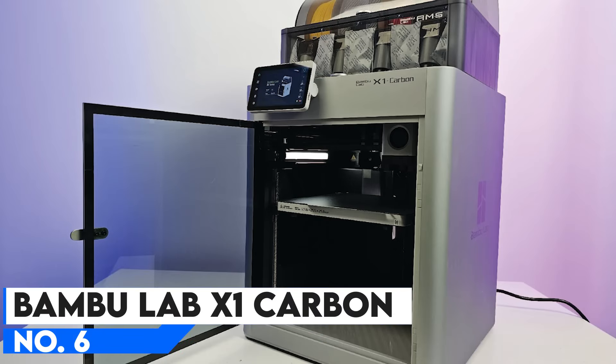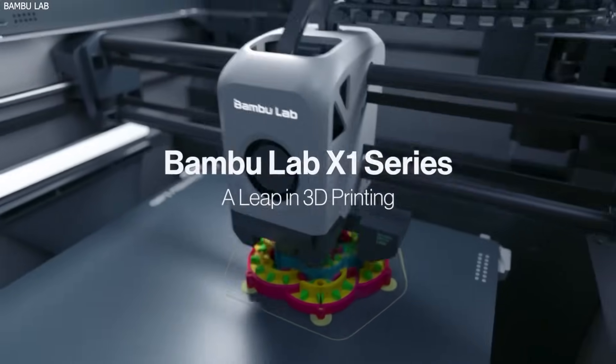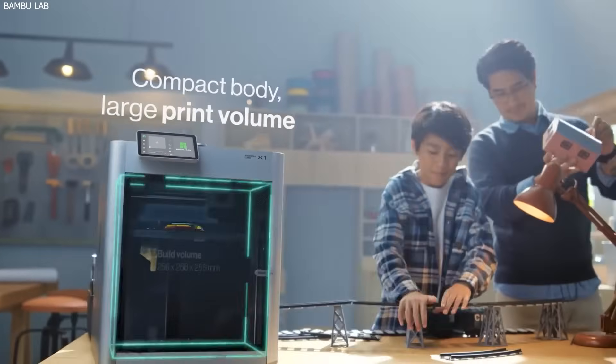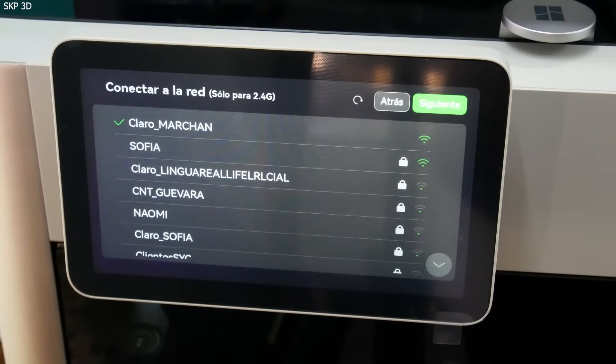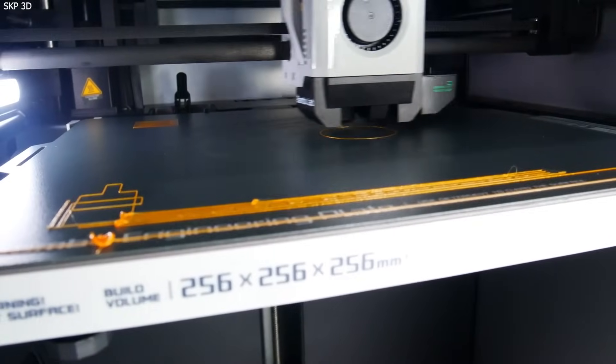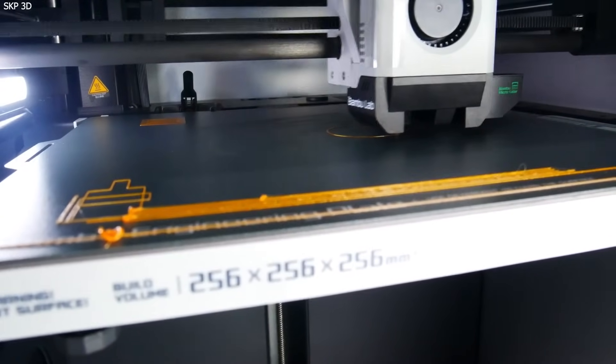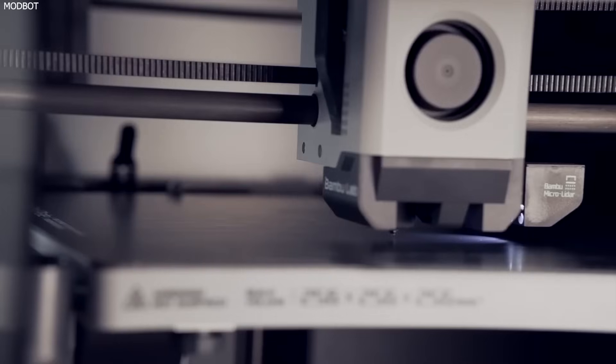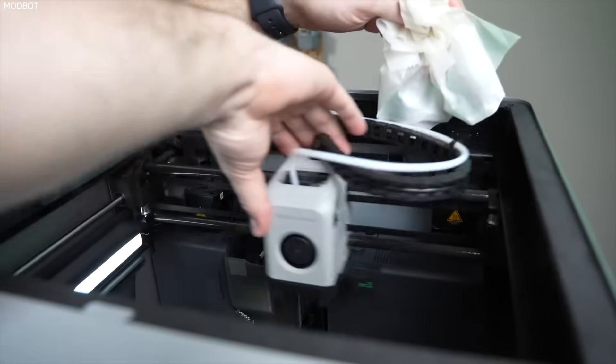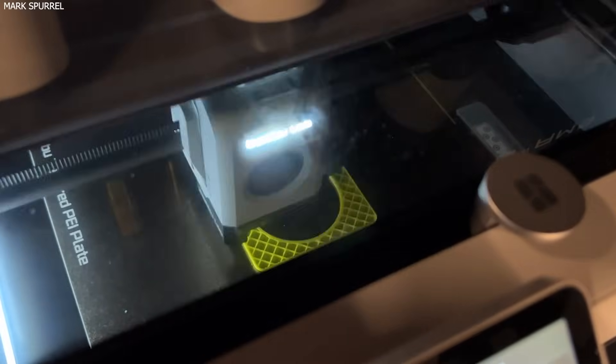Number 6: Bamboo Lab X1 Carbon, Best AI-Powered 3D Printer. The Bamboo Lab X1 Carbon is a state-of-the-art 3D printer that incorporates AI-assisted printing, multi-material capabilities, and high-speed performance. Designed for professionals and serious enthusiasts, this printer leverages cutting-edge technology to provide an unparalleled printing experience. A standout feature is the AI-powered camera system, which monitors prints in real-time and detects issues before they cause failures. The automatic material system, AMS, enables multi-color and multi-material printing, allowing for complex, high-quality prints with minimal manual intervention.